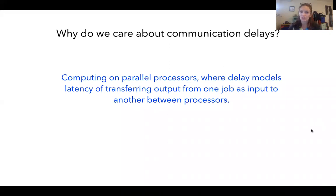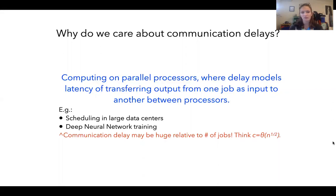Why do we care about the communication delay model in practice or in theory? In practice, computing on parallel processors is ubiquitous, and the communication delay models the latency of transferring output from one job as input to another job between processors — maybe it takes M1 some amount of time to send information to M2. We see this arise in scheduling large data centers and DNN training. In both settings, the communication delay might be huge relative to the number of jobs — we think of C as maybe N to some small power — and this delay could really dominate the runtime if we're not careful with scheduling.